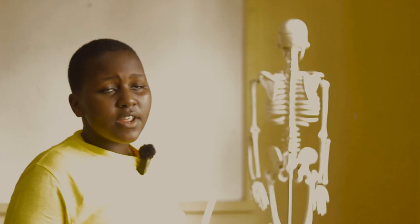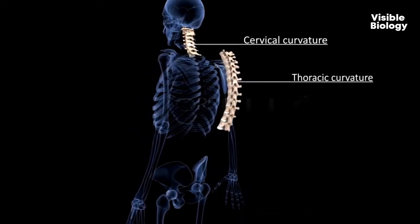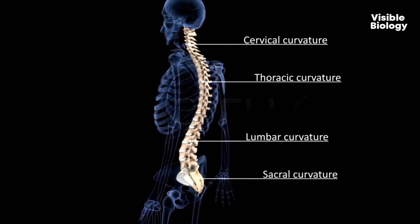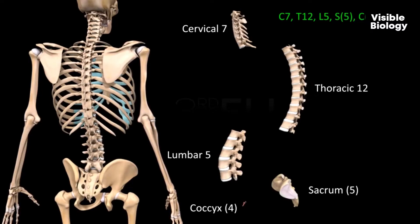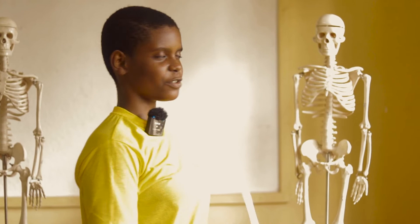The vertebral column is divided into different sections: the cervical, which are seven; the thoracic, which are twelve; the lumbar, which are five; the sacrum, which are five fused together; and the coccyx, or the tailbone, which are four fused together.